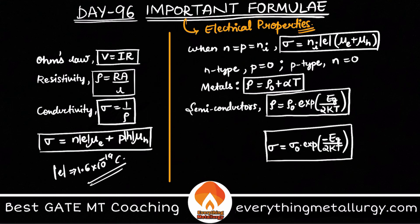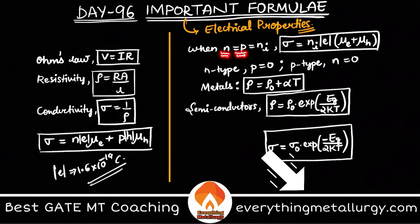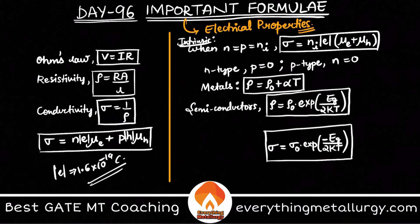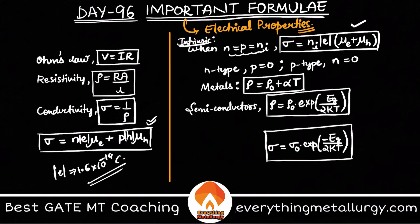For an intrinsic semiconductor, every electron jumping from the valence band to the conduction band produces a hole, so for every electron there is a hole generated. That means n = p. Setting both equal to ni (the intrinsic charge carrier concentration), we get: σ = ni·|e|·(μe + μh).